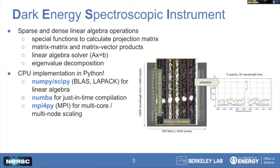It's implemented in Python, leveraging the NumPy and SciPy libraries for linear algebra, which often wrap lower-level routines from BLAS or LAPACK. They also leverage Numba for some specialized functions so that they're compiled and run a bit faster than native Python code. For both multi-core and multi-node scaling, their application uses MPI via MPI for Python.